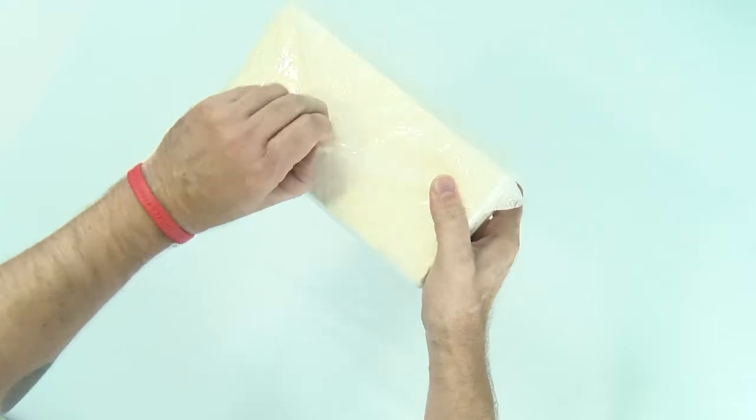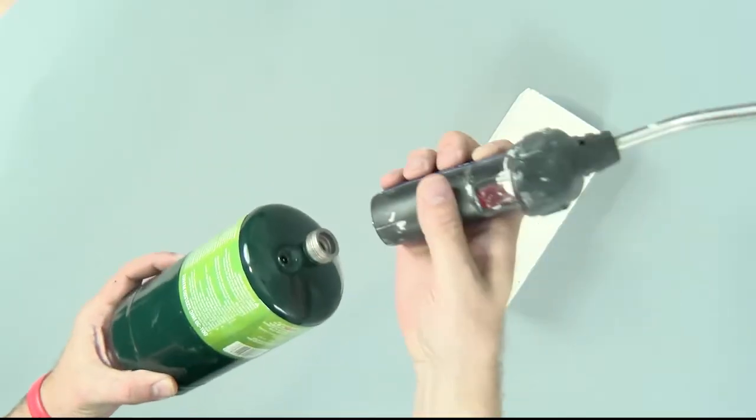Start by unwrapping the refractory brick and show it to the students. Attach the propane torch head to the propane tank.